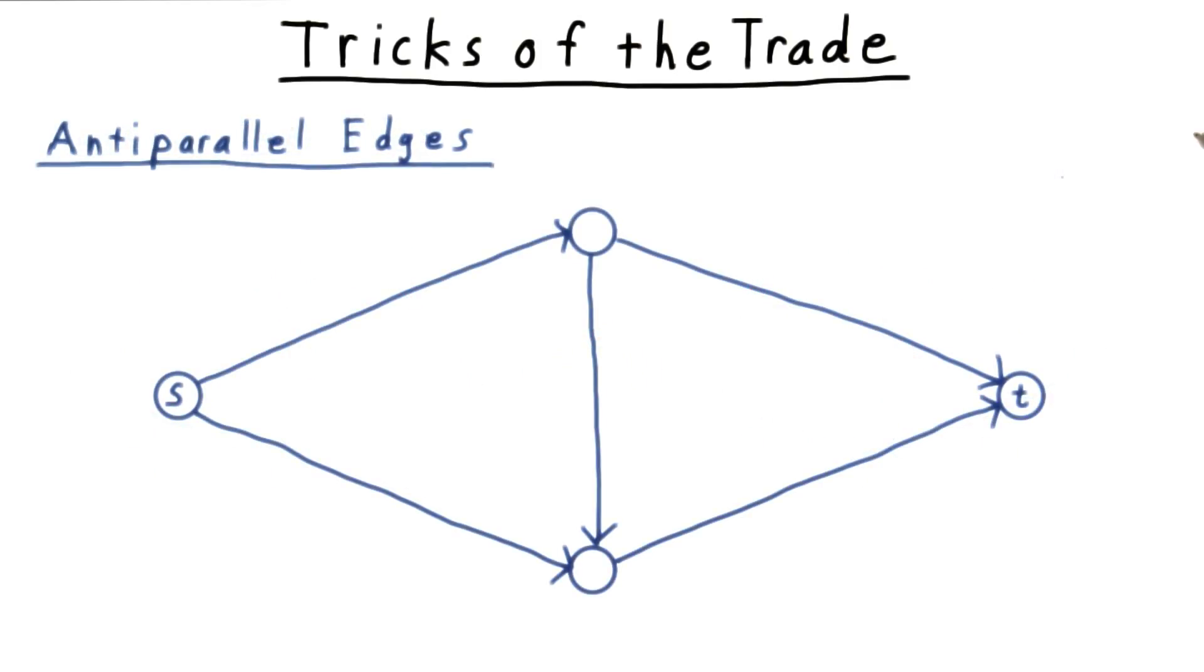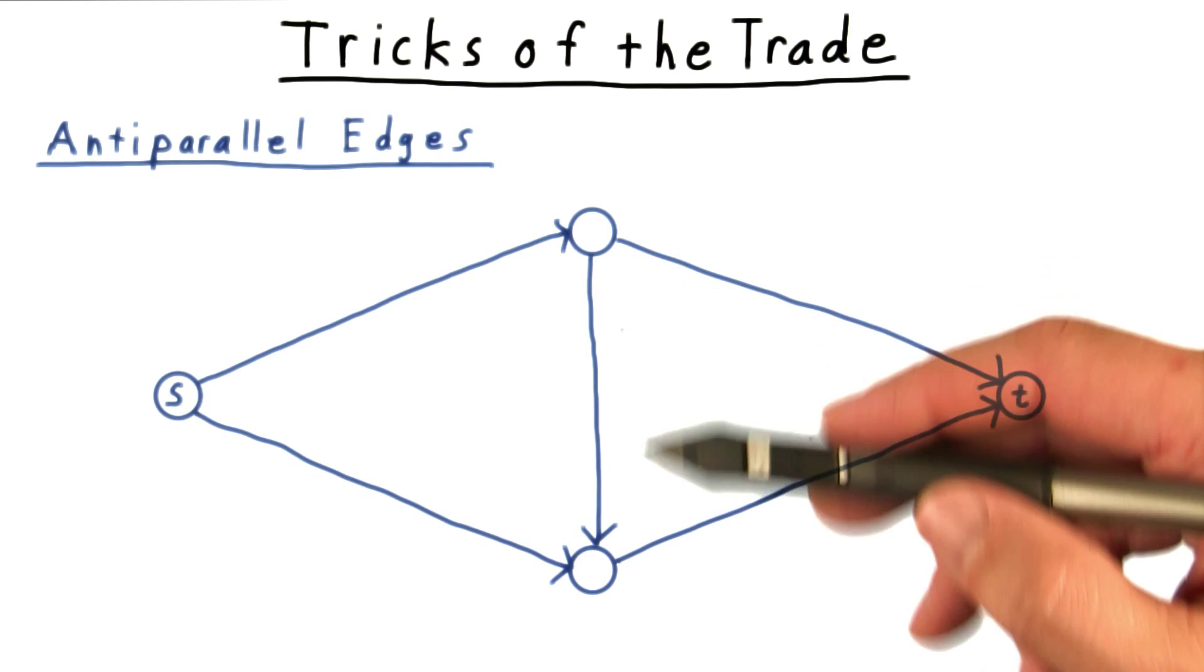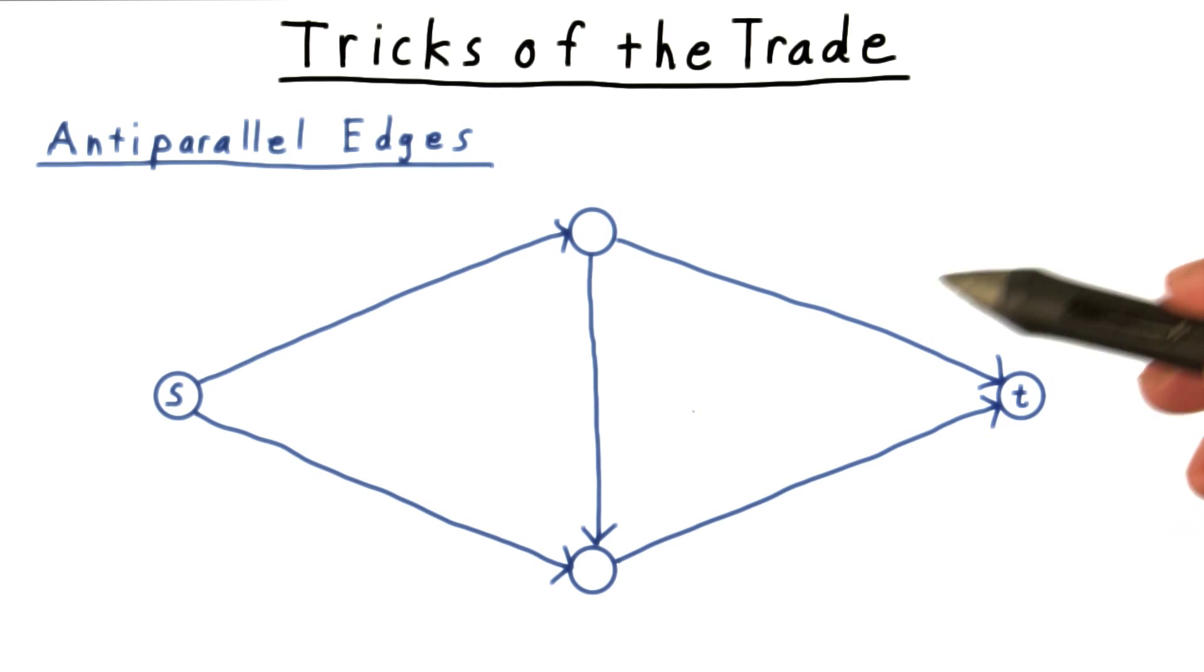Another limitation we've imposed is that no anti-parallel edges are allowed in the network. This forces us to choose a direction for the flow between every pair of vertices. In general, however, it might not be clear in which direction the flow should go before solving the max flow problem. It's possible to cope with this situation with some slightly less elegant analysis.